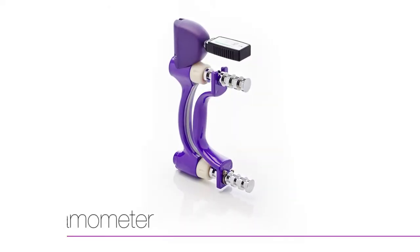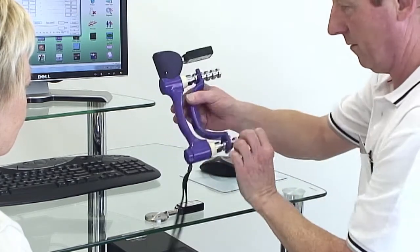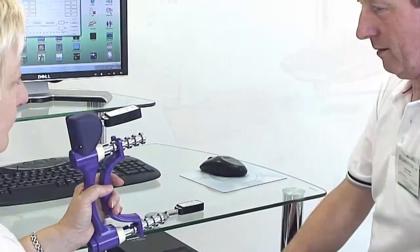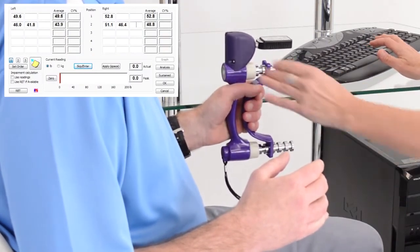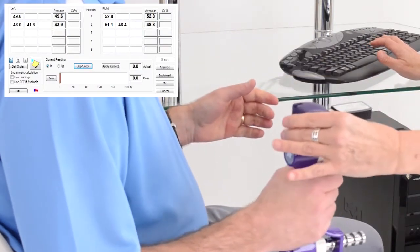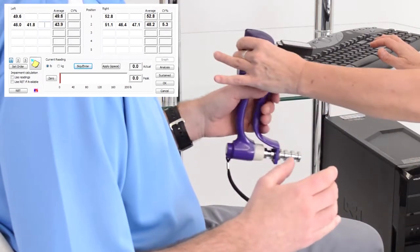The e-link dynamometer allows tests to be performed quickly and includes assessments that cannot be undertaken with a manual device. Standard peak force grip test with automatic calculation of the average also provides the coefficient of variation percentage for consistency of measurement.